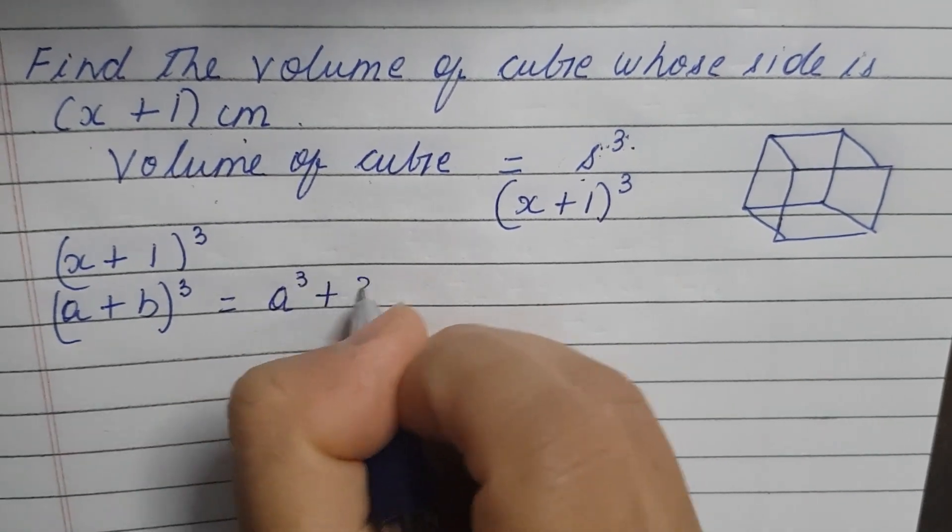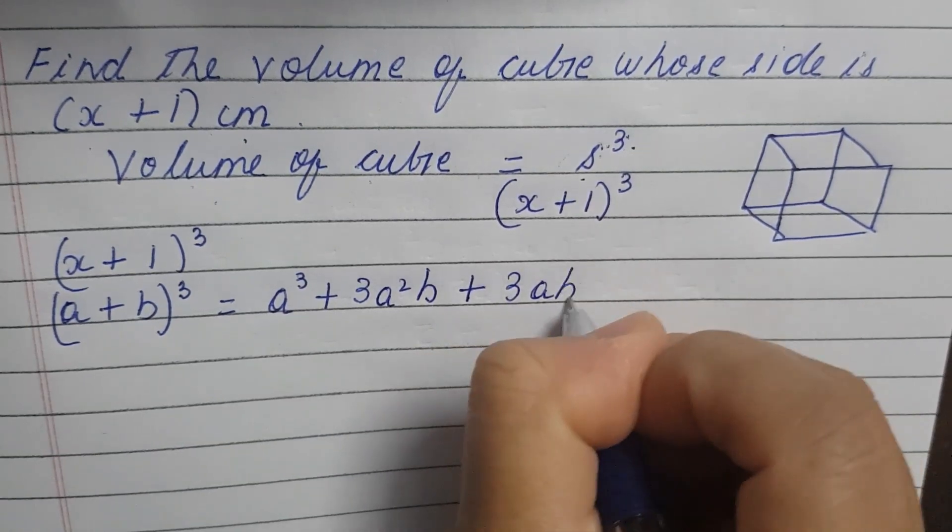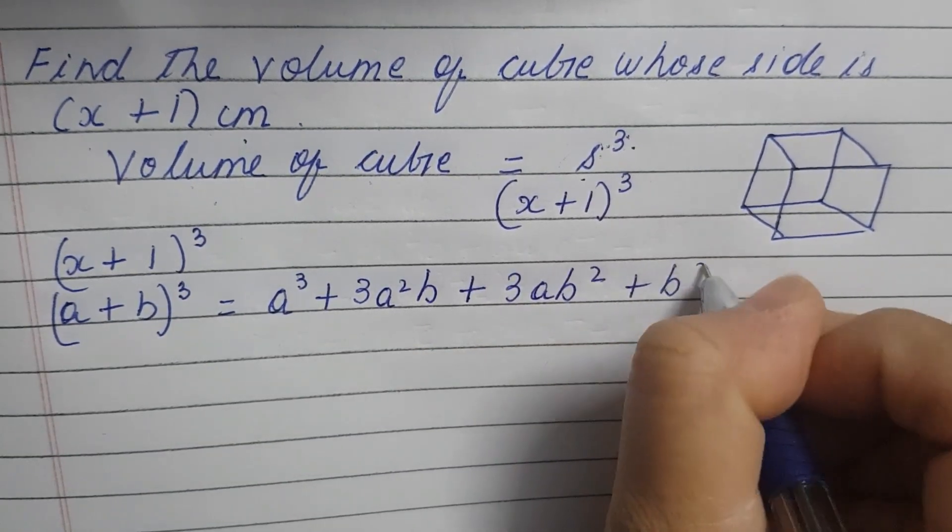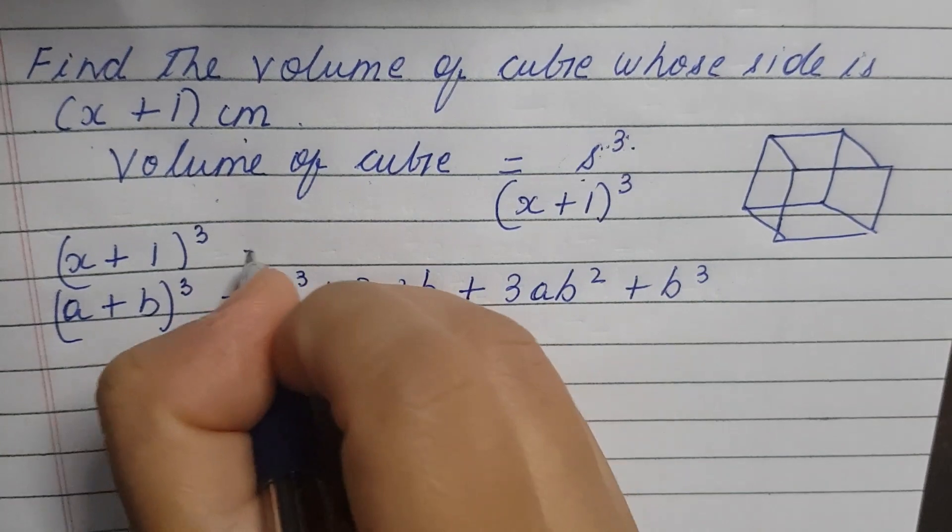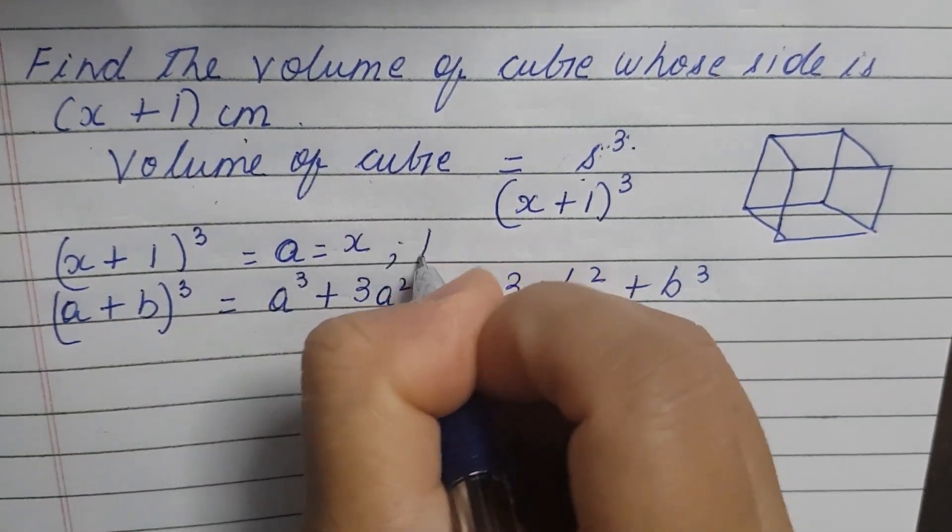a³ plus 3a²b plus 3ab² plus b³. So now, x is a, and b is 1.